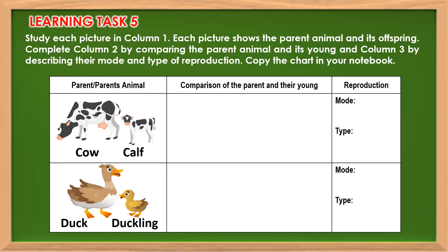Here is another activity for you to answer. Study each picture in column 1. Each picture shows the parent animal and its offspring. Complete column 2 by comparing the parent animal and its young, and column 3 by describing their mode and type of reproduction. Copy the chart in your notebook.